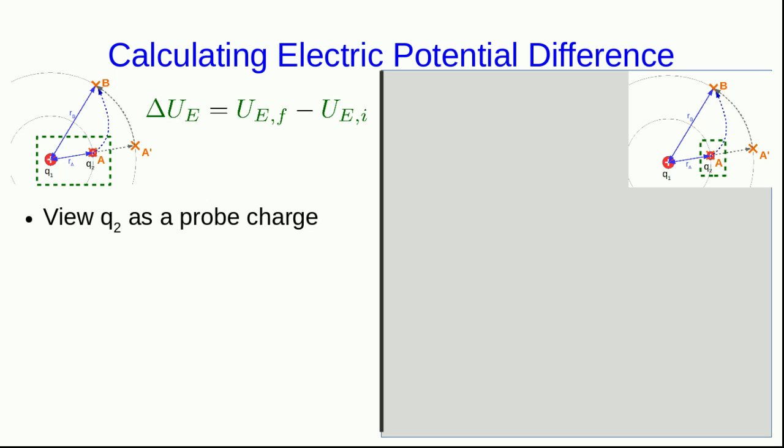We saw in video lecture one of this unit that we can define something that we call electric potential, and it's related to potential energy in much the same way that field is related to force. In other words, it can be thought of as potential energy per unit charge at a location in space. So let's now view our charge q2 here as a probe charge and look at this in more detail.